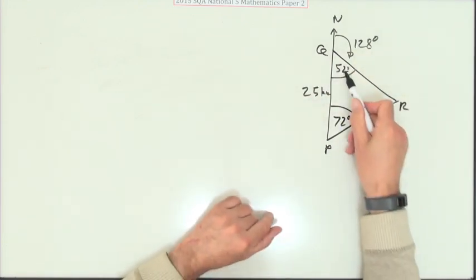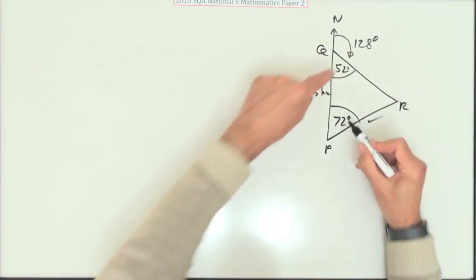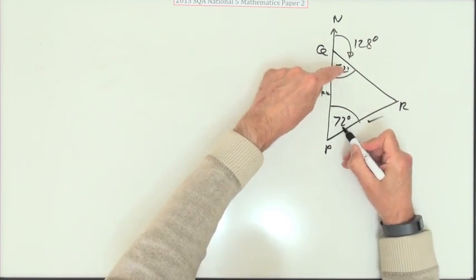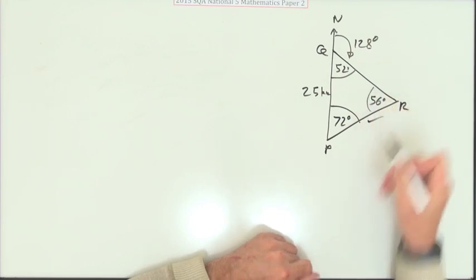And not only that, as soon as I've got two angles in a triangle, I can get all three. They add up to 124. So that leaves 56 for this one.